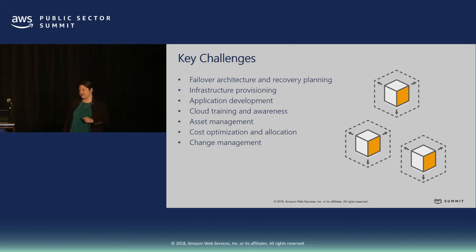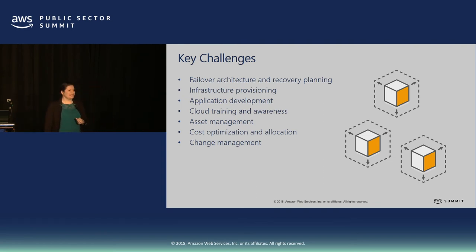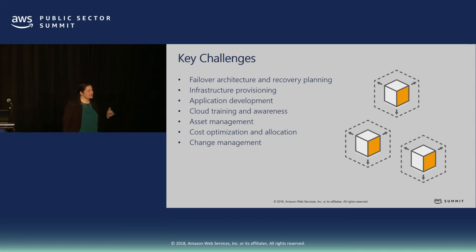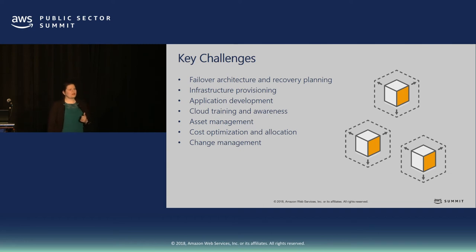Asset management — CMDBs tend not to track everything. In the cloud with tagging and transparency, you know exactly what you have. Use that capability to keep track of it. In the end, that's how you optimize costs: you know what's out there, who's using it, and why they're using it. That will move you forward.